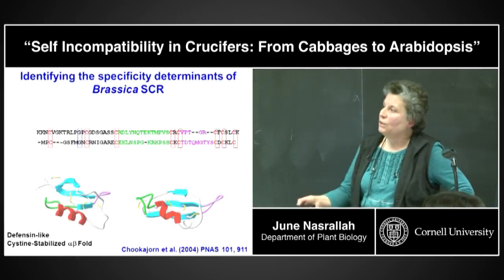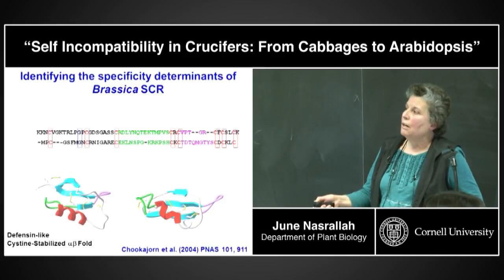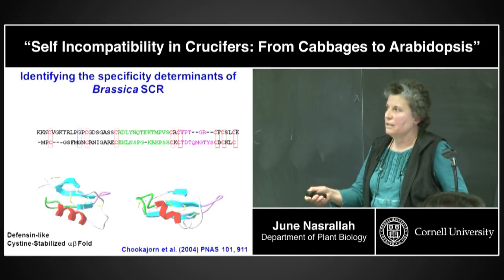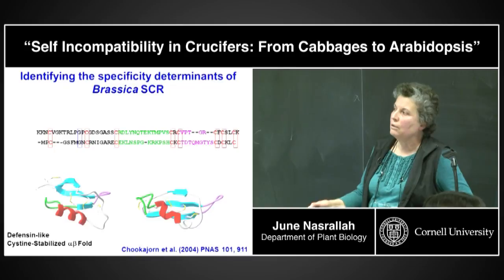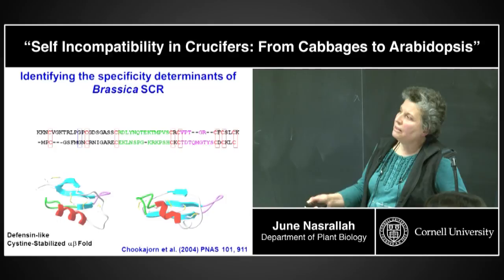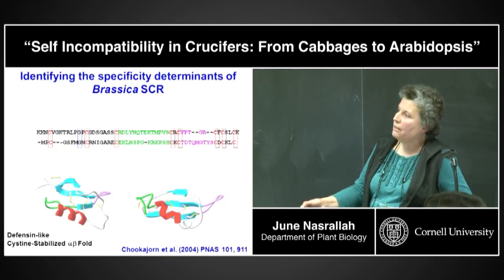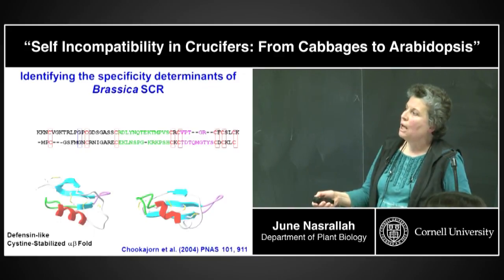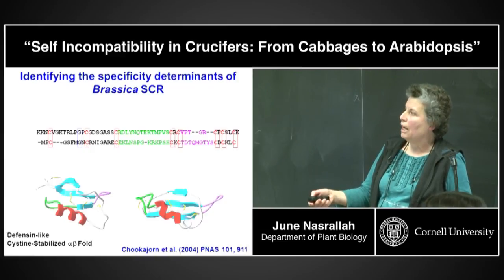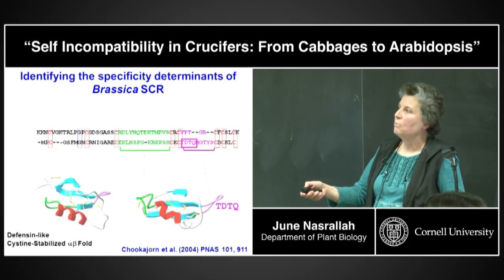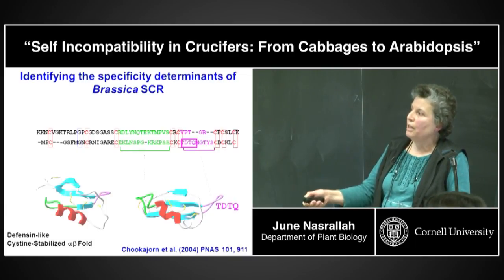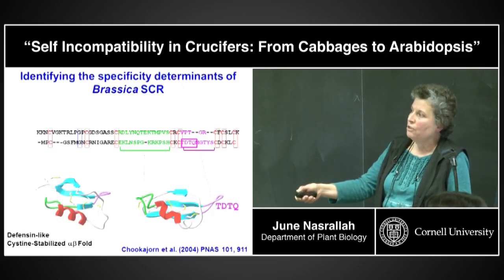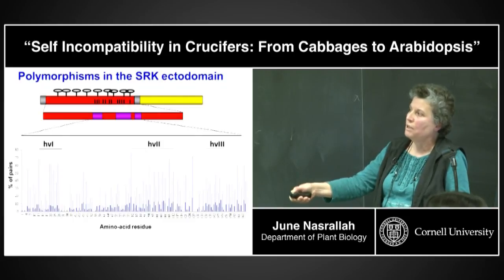Using this assay and 3D modeling of the SCR peptide, we found that despite high polymorphism, all SCR peptides assume a defensin-like cysteine-stabilized alpha-beta fold. We focused on two loops that seem to protrude from the molecule. Graduate student Tanat Chukajorn made mutants and domain swaps between two variants of SCR and found that only four residues within one loop were sufficient to confer S6 specificity on another variant. Inserting TDTQ into this variant caused it to assume the specificity of the S6 variant.